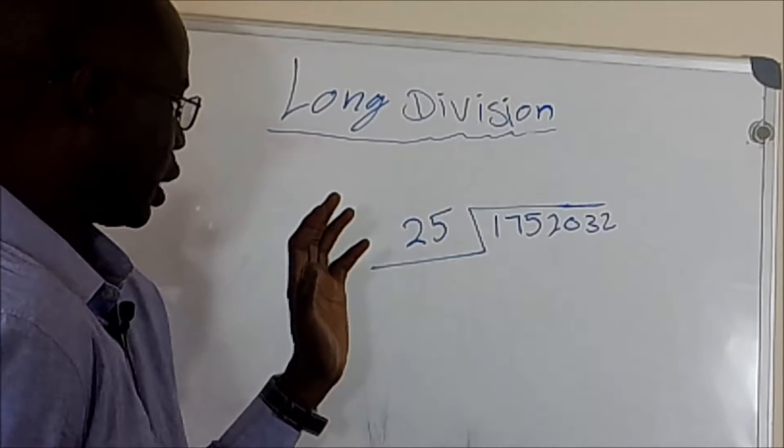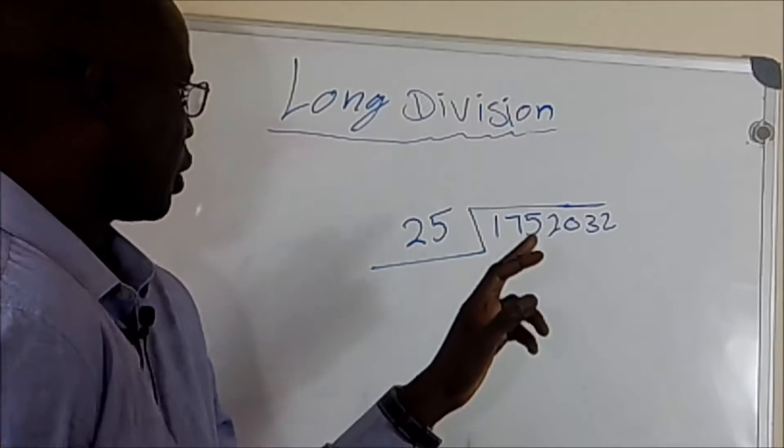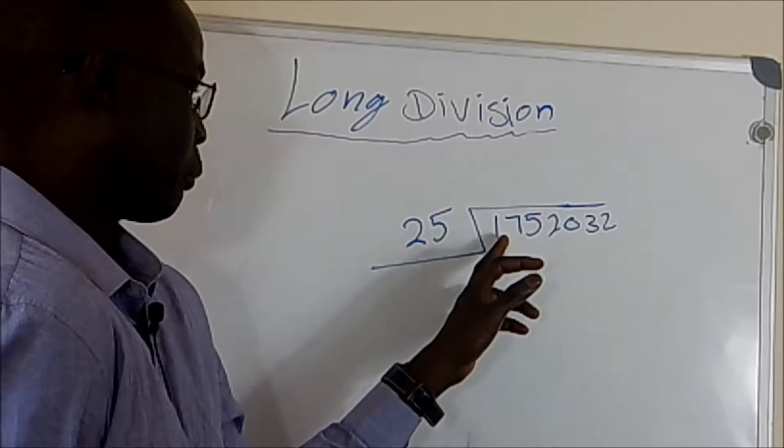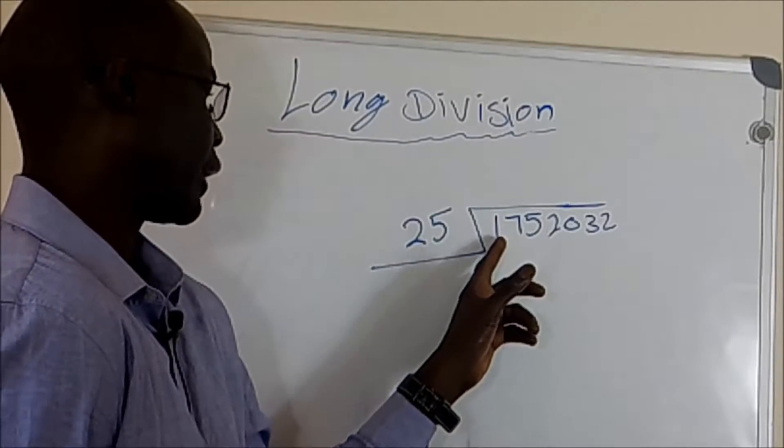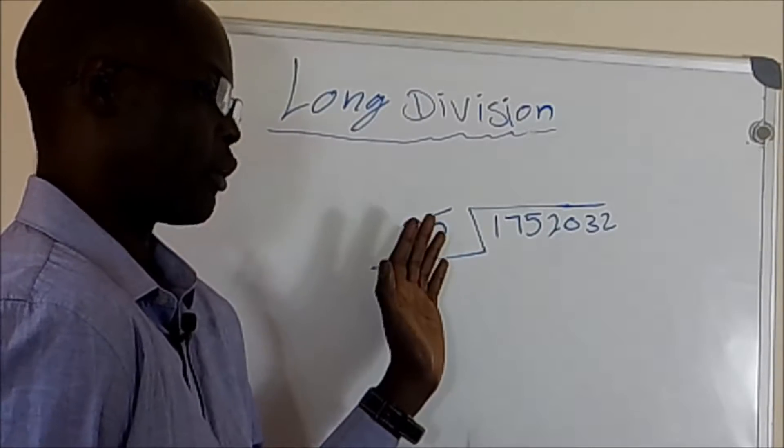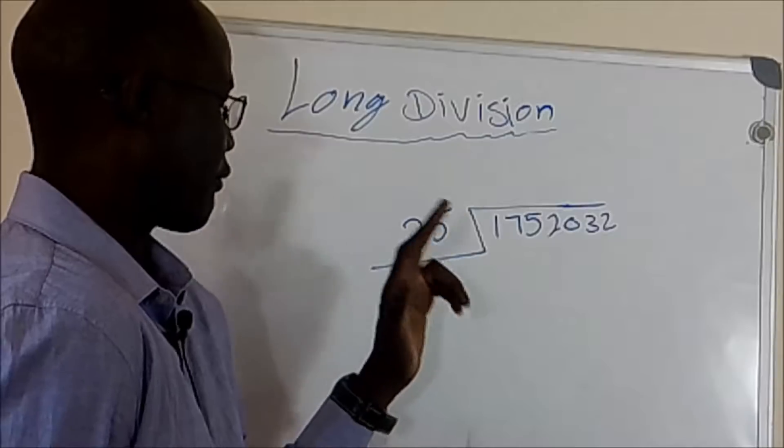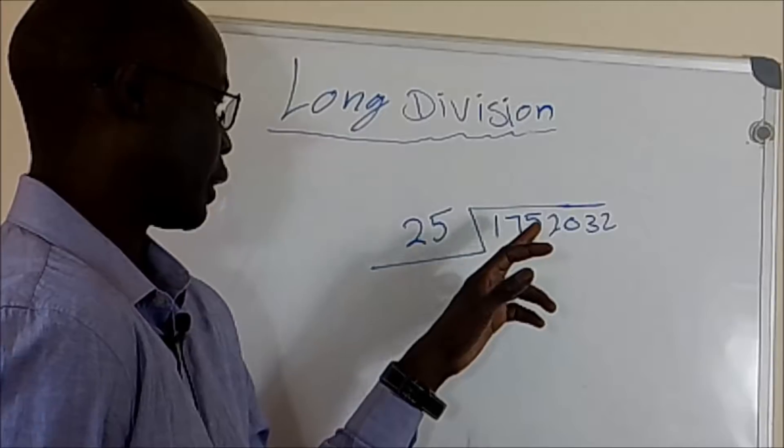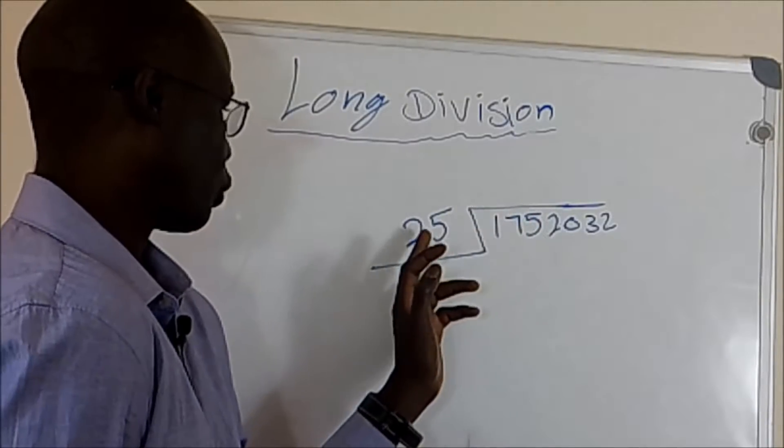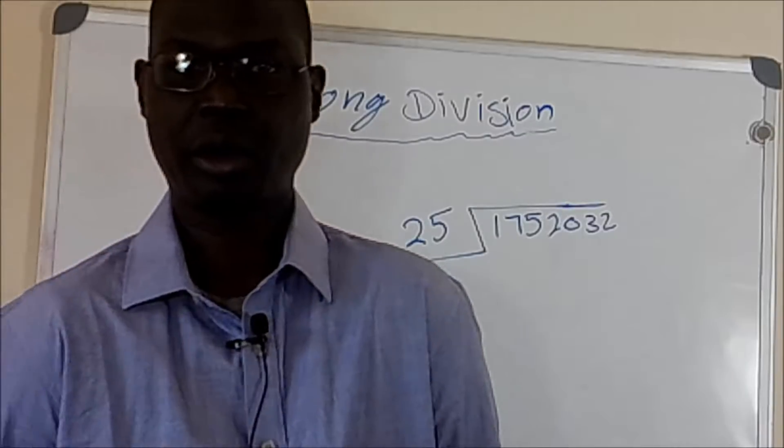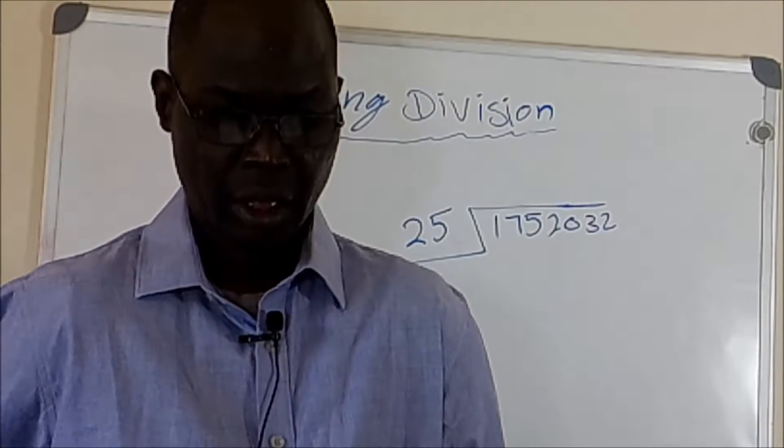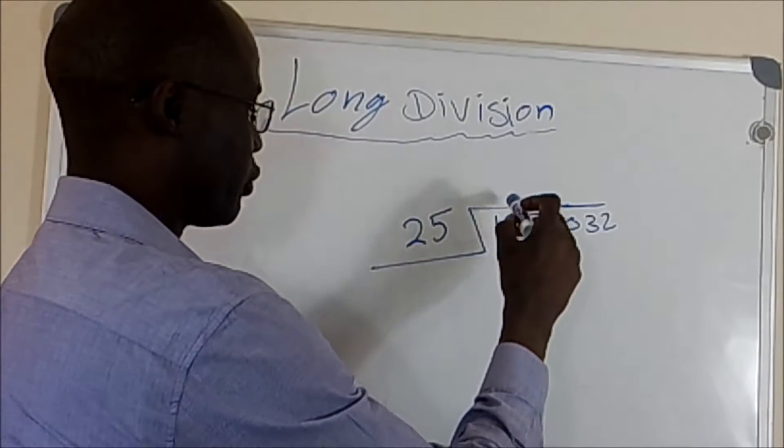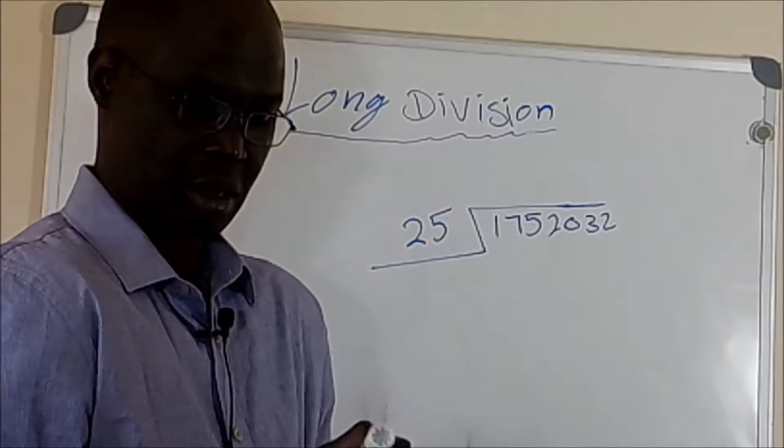The way long division works, we begin from left to right. So we begin with the first number, and then we see if we can divide it by the number on the left. If that doesn't work, we try the second number until we get a whole number that can be divided by 25. So in some cases, you see a zero on the left, and sometimes the number is just there.